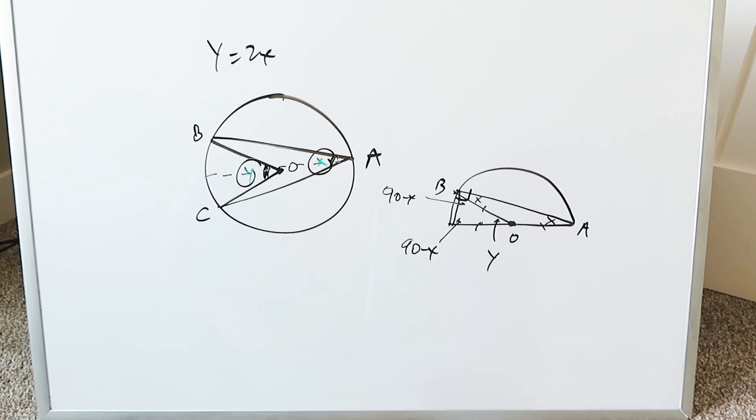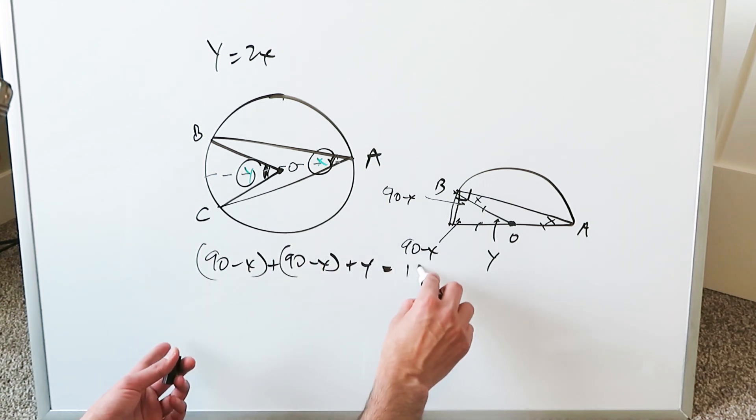We're looking here at this smaller triangle. Now we've generated 90 minus X plus another 90 minus X plus a Y. The sum of the internal angles must equal 180.